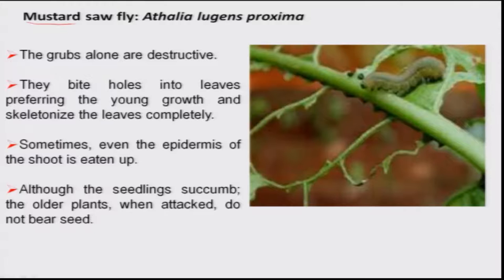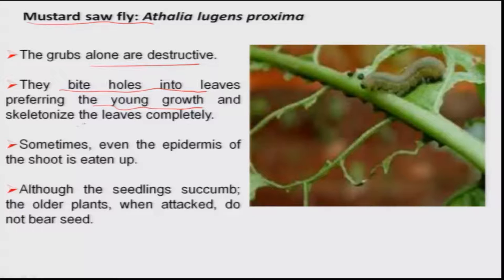Another important pest is mustard sawfly, Athalia spp., belonging to the order Hymenoptera — an exceptional pest since most hymenopteran insects are parasitoids, but the grub of this sawfly is a very destructive pest on mustard. They bite holes into leaves, particularly of young seedlings, causing total death of the plant. In later crop stages, it also feeds on leaves, preventing seed bearing on the plant.